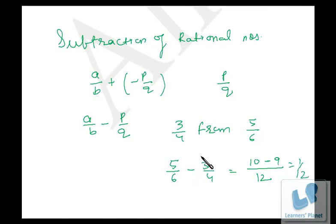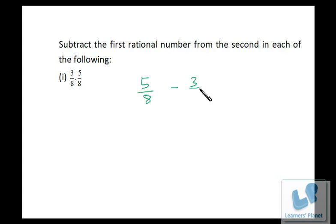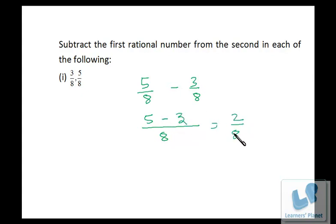Let's take more examples. Here we have to subtract the first rational number from the second. Take LCM — it's 8. So 5 will be as it is and minus sign and 3 will be as it is. So it's 2/8. Now simplify this — so it's 1/4.